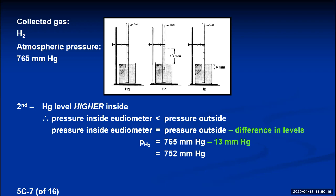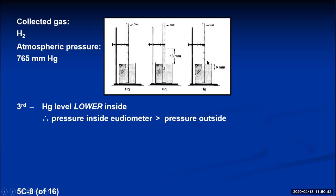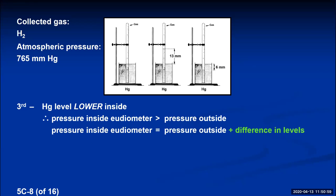In eudiometer number three, the mercury level inside is lower than outside. That means the hydrogen molecules are pushing harder than the atmosphere, so the gas pressure is greater than atmospheric. If the level is 6 millimeters lower, the pressure inside would be atmospheric pressure plus the difference: 765 + 6 = 771 mmHg.